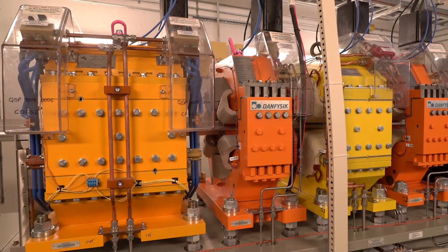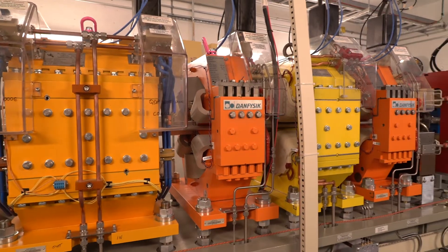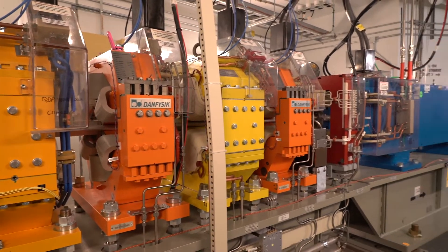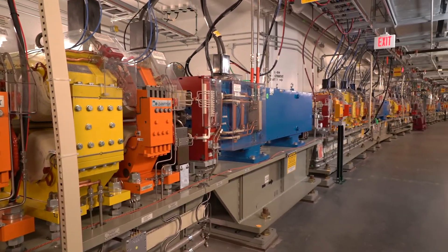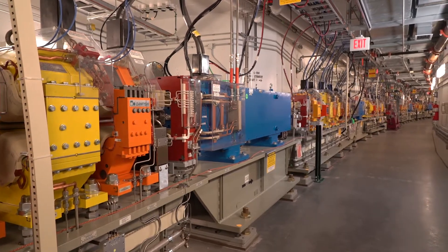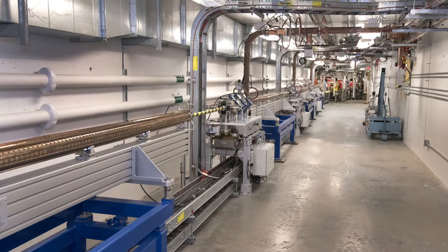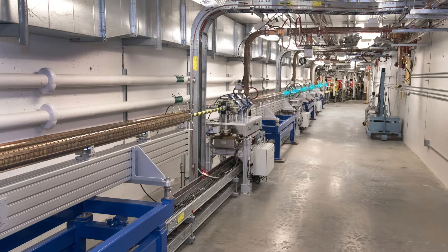So the first stop on our tour is the accelerator tunnel which is the heart of NSLS-2. That's where we actually produce those bright x-rays for doing experiments. We produce the x-rays using electrons and what we do is we take electrons which are electricity like you get from your electrical socket.